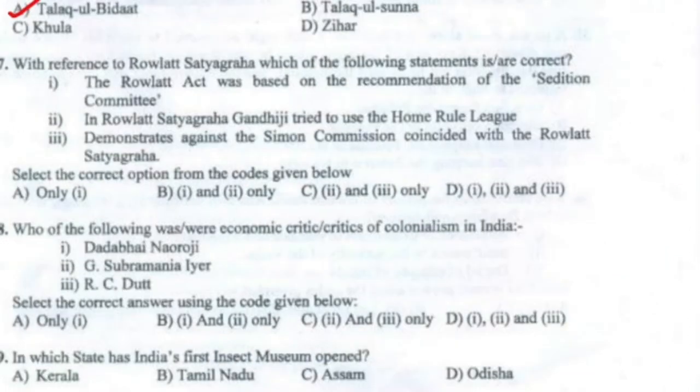Question 27: With reference to the Rowlatt Satyagraha, which of the following statements is correct? The Rowlatt Act was based on the recommendation of the Sedition Committee, and in the Rowlatt Satyagraha, Gandhiji tried to use the Home Rule League. Option B.